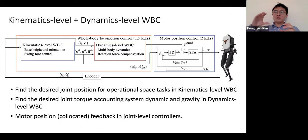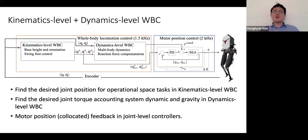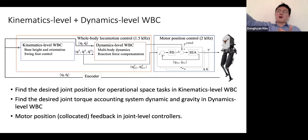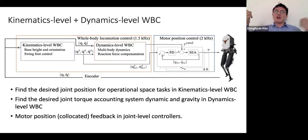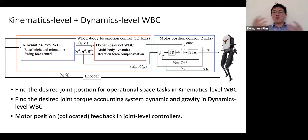This approach is collocated, meaning your feedback loop is right near your actuation point. It is always easier to control something right at the motor than something connected through a drivetrain, where you must handle the dynamics between the actuator and the control point. If control is right next to the actuator it's much easier. Collocation means I'm controlling the motor instead of the foot.